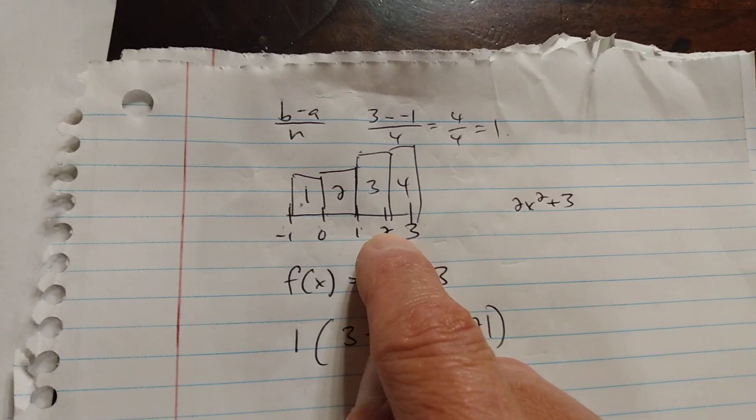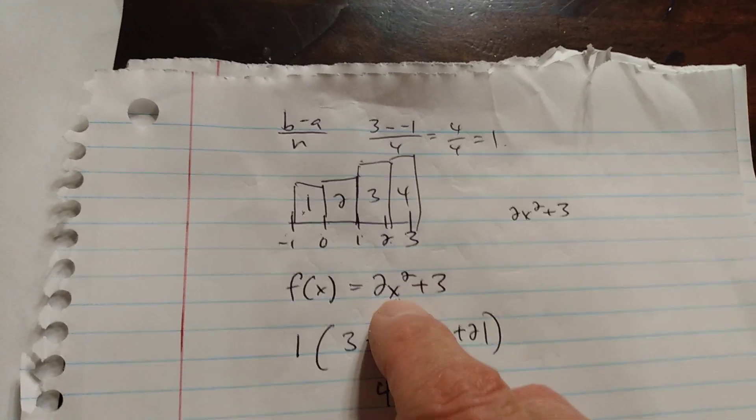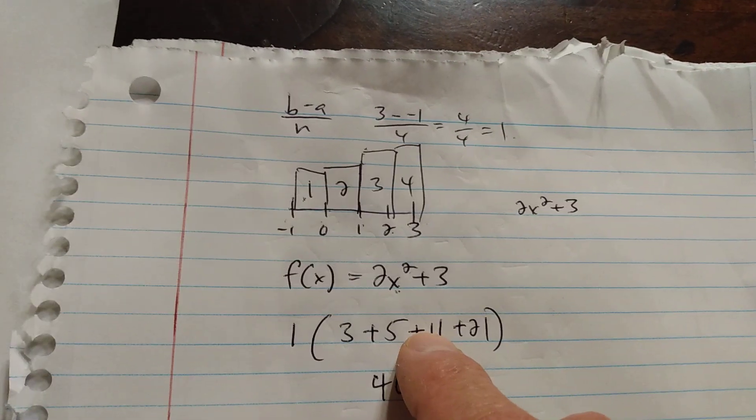Go to my third rectangle, sub 2 in, because it's the right side value. 2 squared is 4, times 2 is 8, plus 3 is 11.